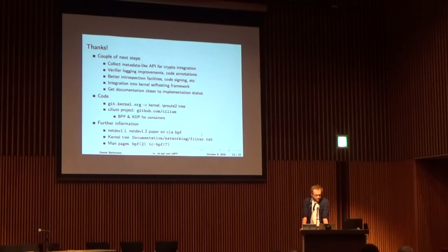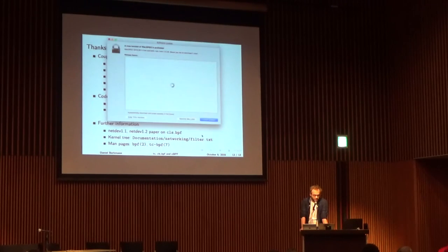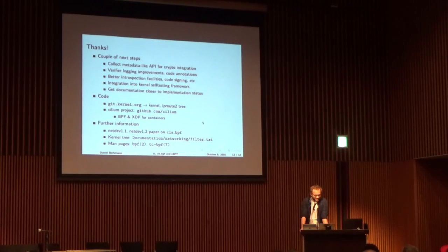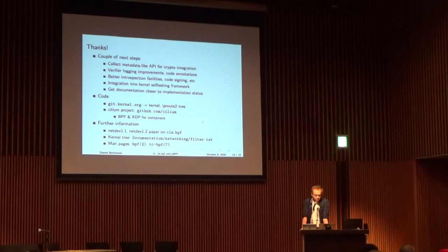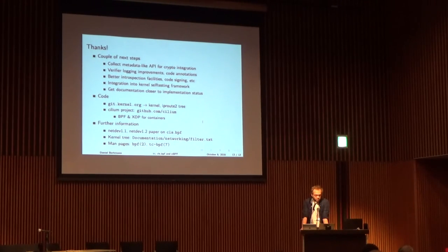The code is all on git.kernel.org — the mainline kernel and iproute2. The Cilium project, which uses BPF for containers, is open source on github.com/cilium. Further information is available from the NetDev 1.1 paper about the architecture, some of the topics covered here with sample code, kernel tree documentation, and man pages.